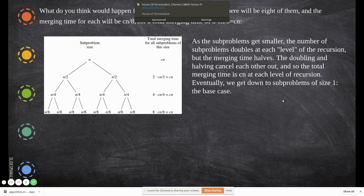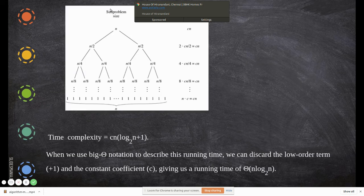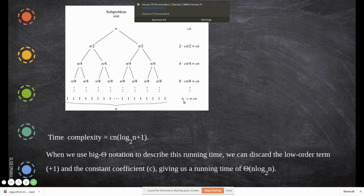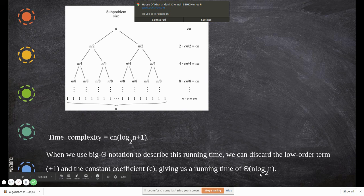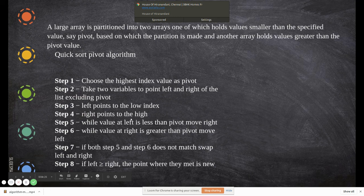Eventually we get down to subproblems of size one, the base case. That's why we can write a complexity as cn log₂ n plus 1. So finally we have log₂ n as our complexity for this algorithm.